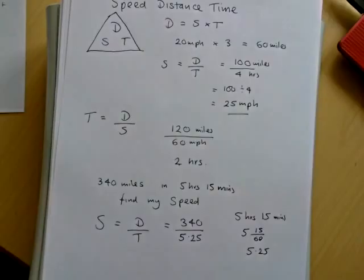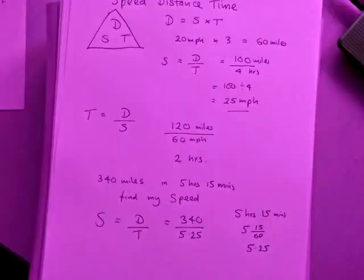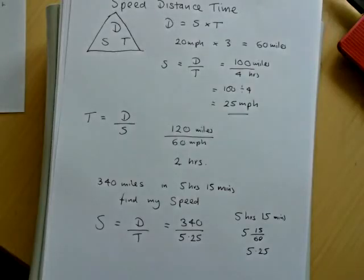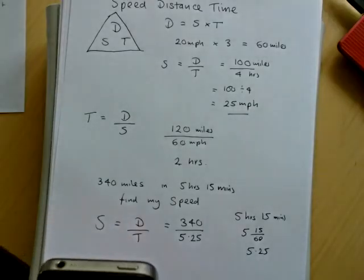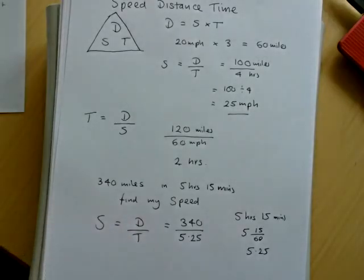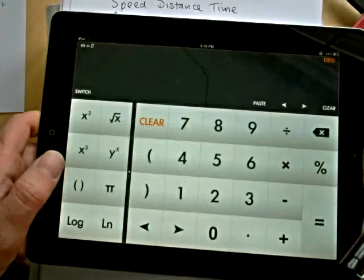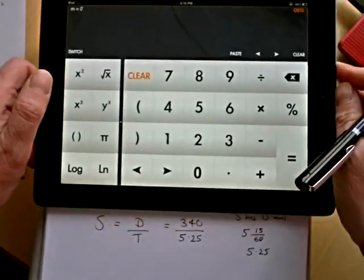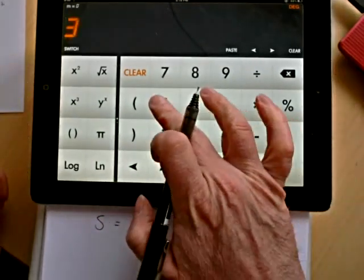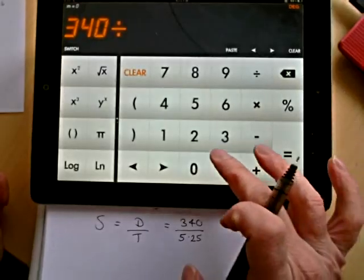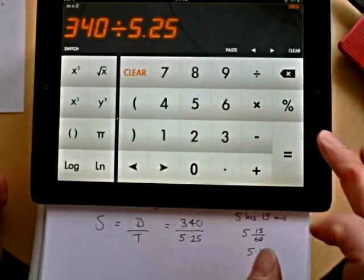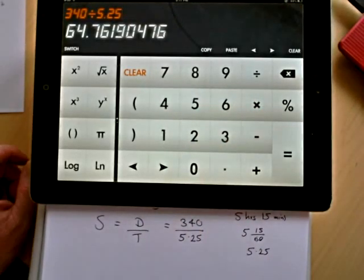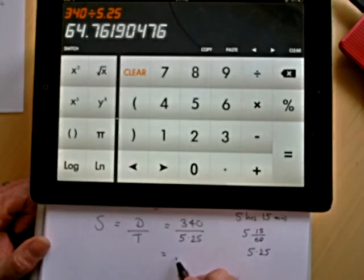So we get the calculator now to finish this off. We're doing 340 divided by 5.25.